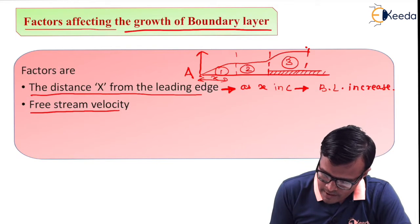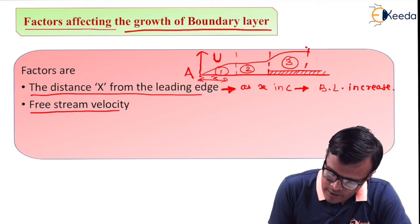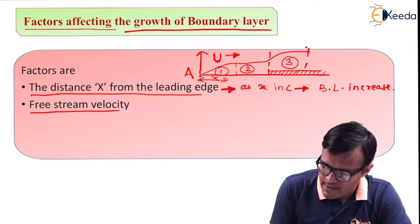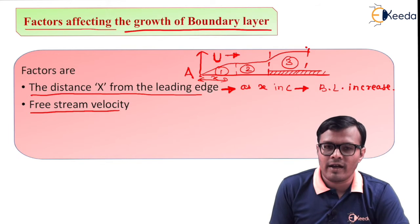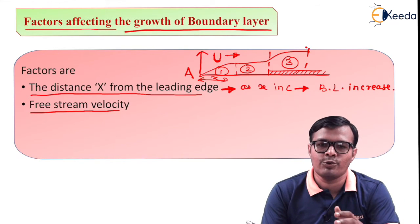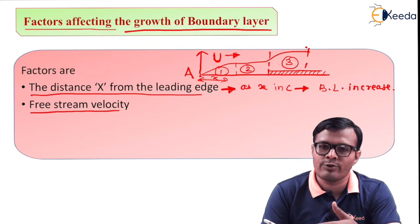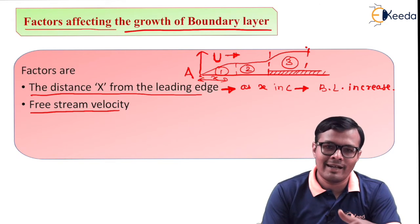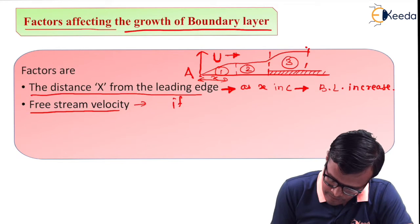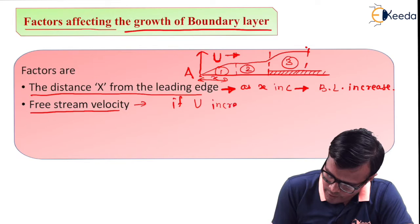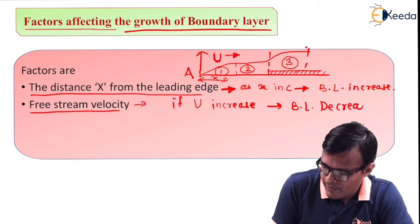Secondly, free stream velocity. Here in boundary layer we have shown velocity with a letter u which was in this direction. Logically we can say that if u, that is velocity which is crossing across the plate, is increased, then it will tend to reduce the thickness of boundary layer. So it is inversely proportional. If u increases, boundary layer decreases.